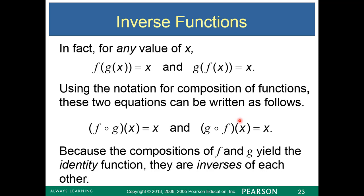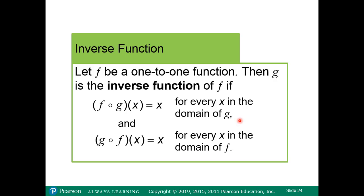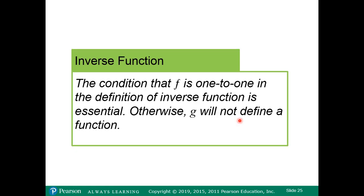An inverse function is defined as follows: let f be a one-to-one function; then g is the inverse function of f if f ∘ g(x) equals x and g ∘ f(x) equals x. The condition that f is one-to-one is essential in the definition of inverse function; otherwise g will not define a function.